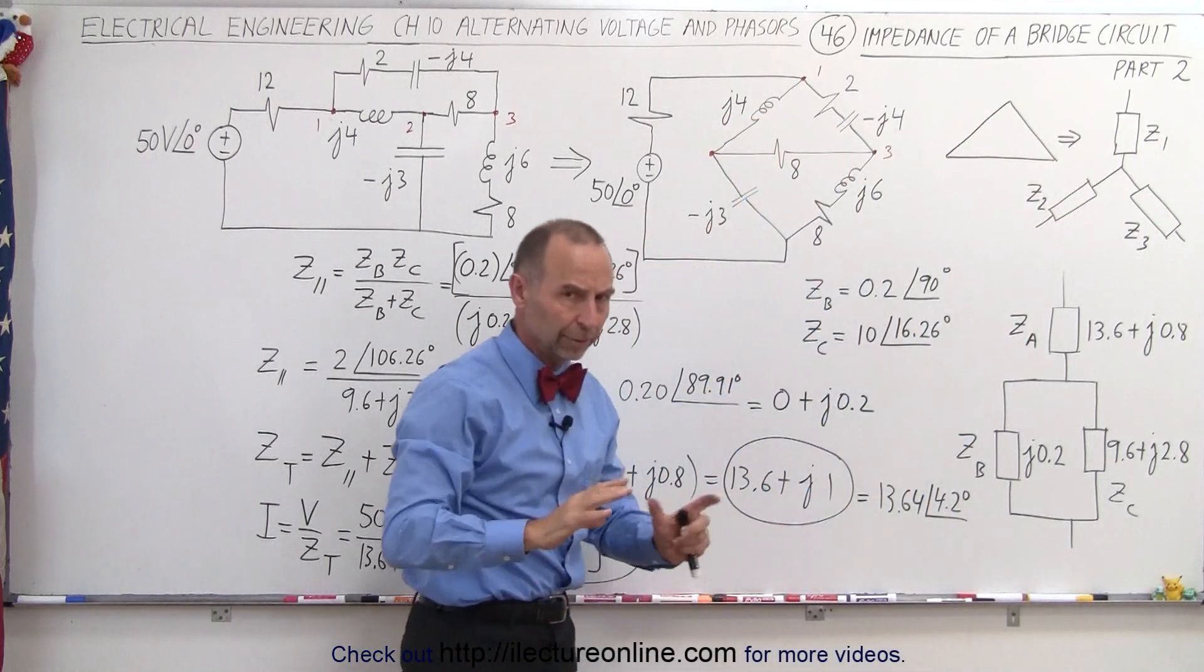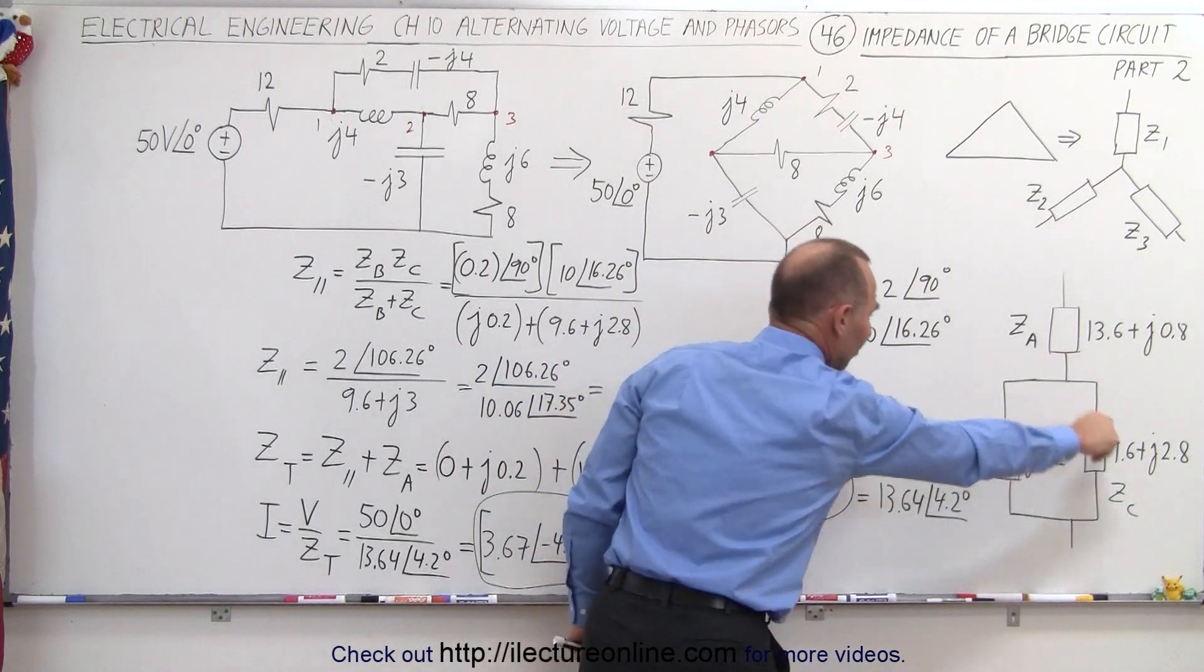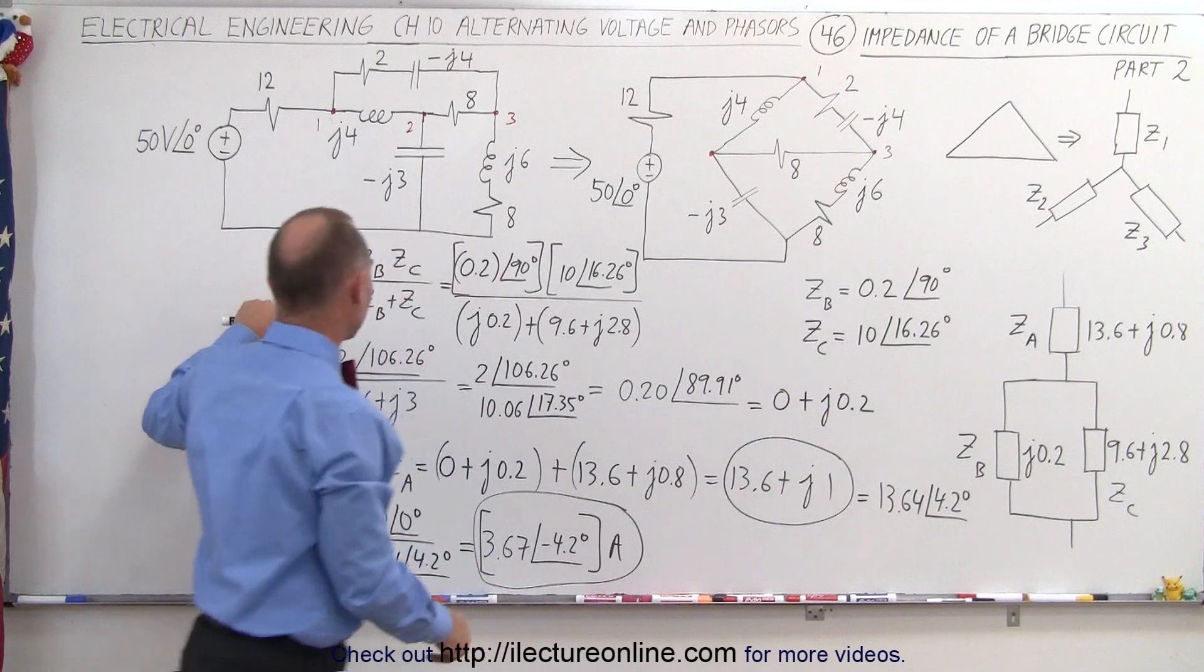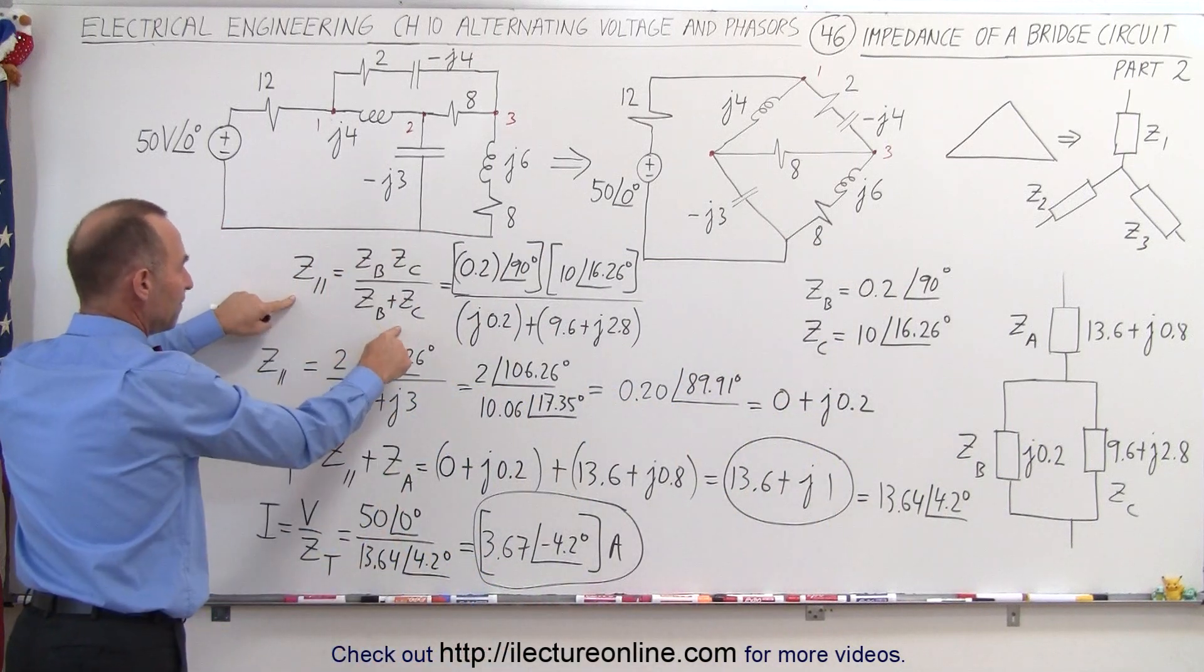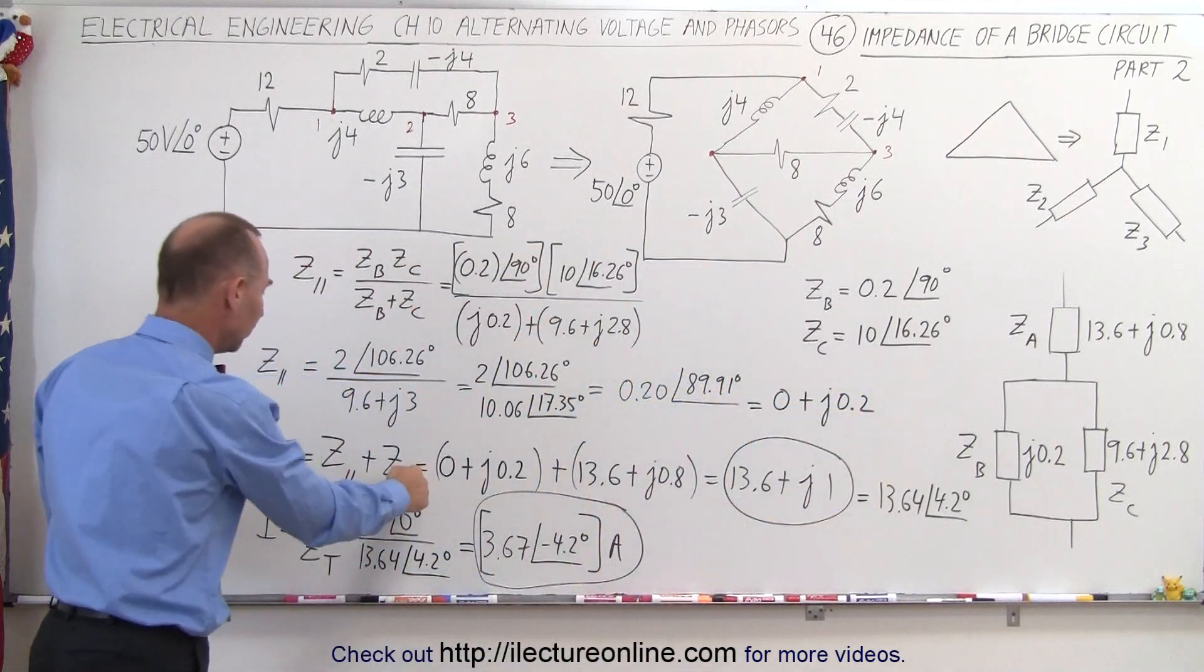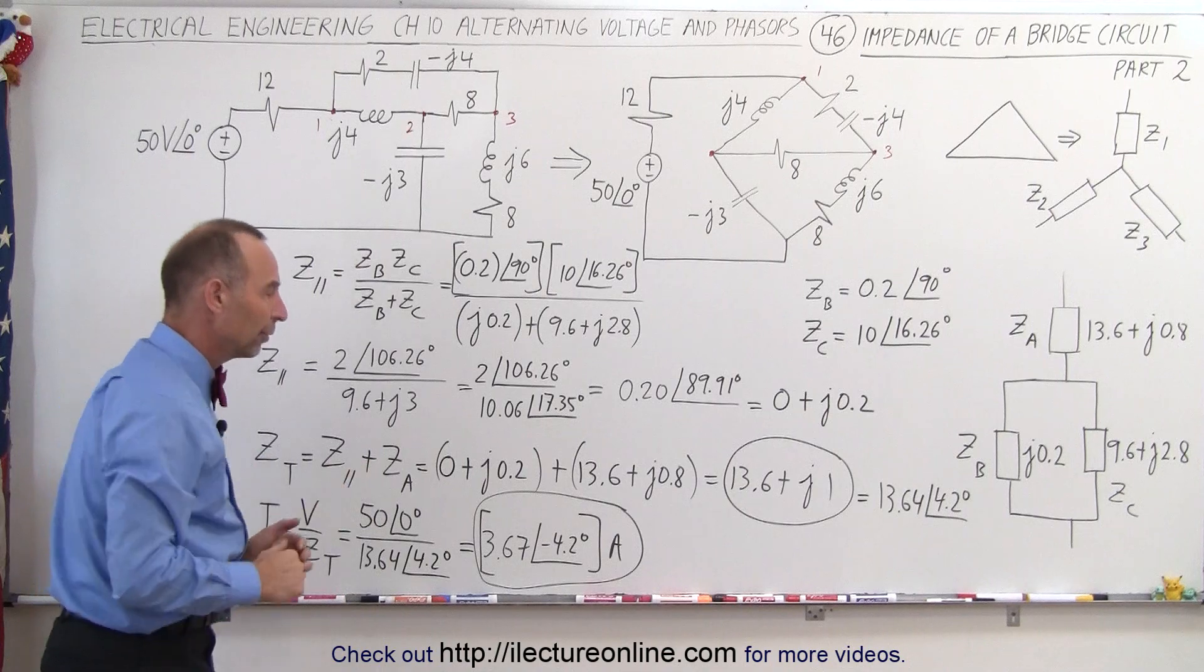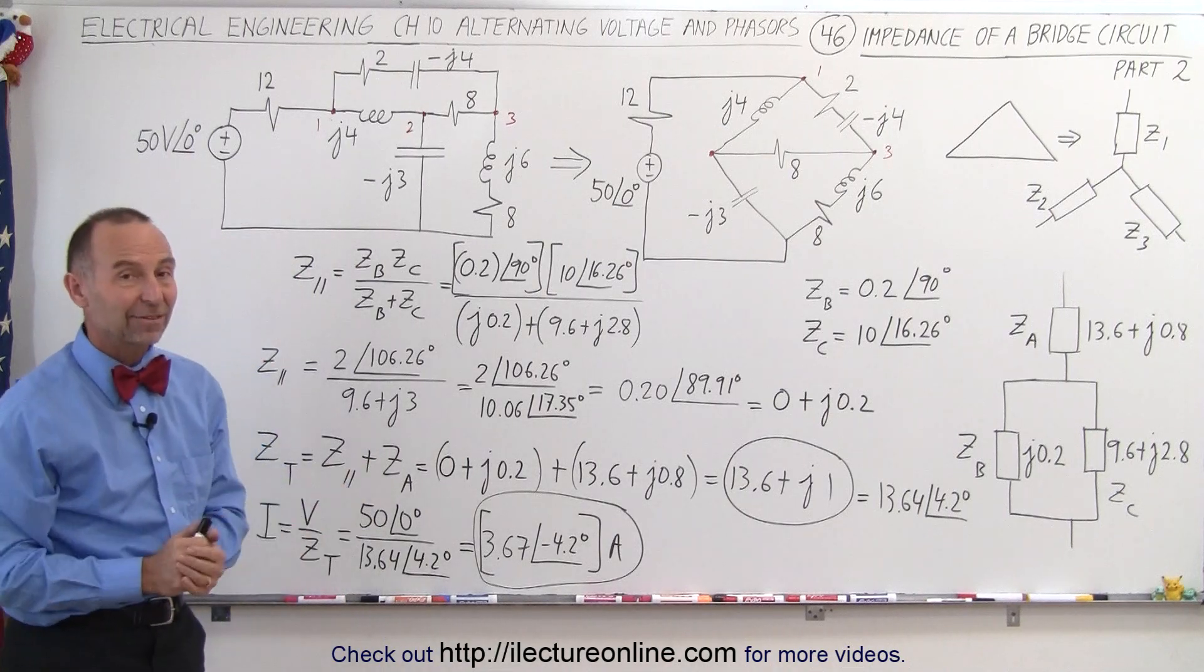Look back at the previous video if you want to remind yourself on that. Then, since this is in parallel, we have to solve the parallel branch, which is the product over the sum. Once we have the parallel branch, we add that to ZA to get the total resistance, and then we divide the total resistance into the input voltage to get the current to the circuit. And that's how it's done.